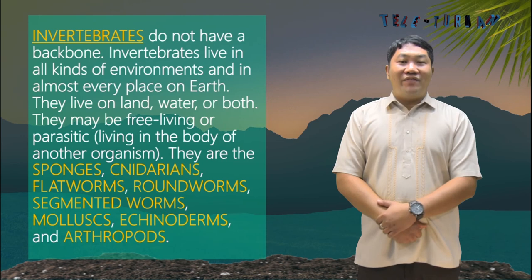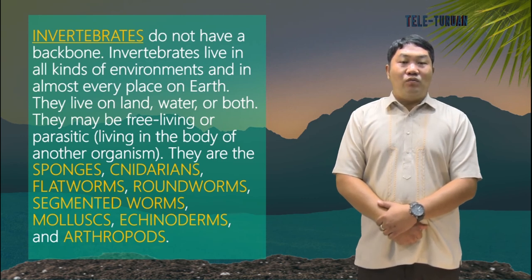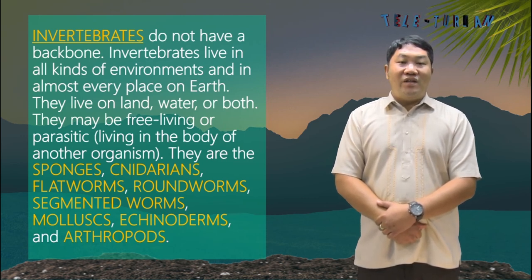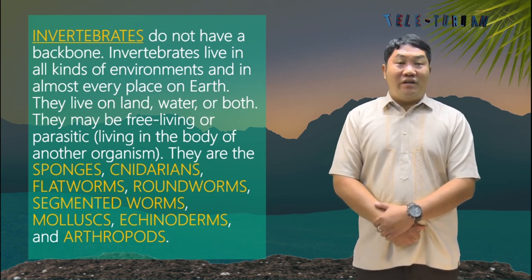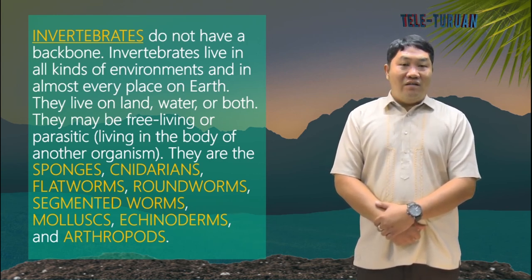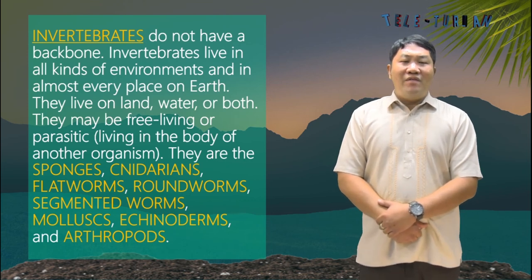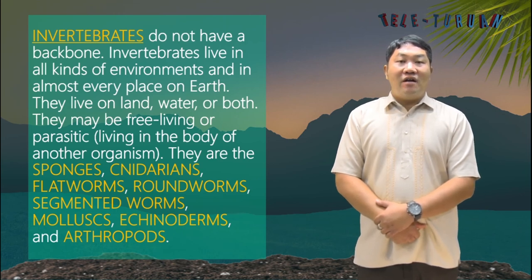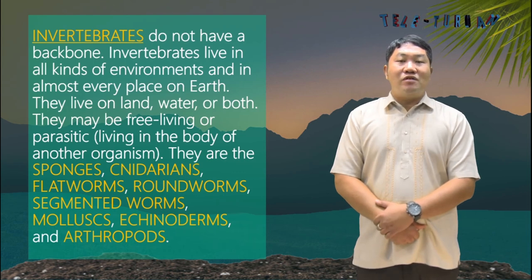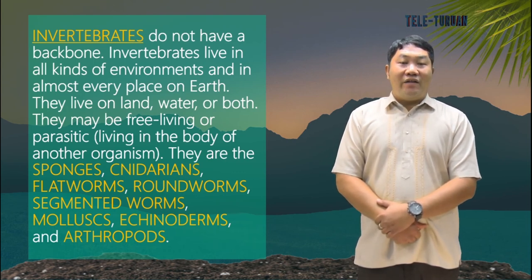Remember that invertebrates do not have a backbone. They live in all kinds of environments and in almost every place on Earth — on land, water, or both — and may be free-living or parasitic. The eight classifications of invertebrates are: sponges, cnidarians, flatworms, roundworms, segmented worms, mollusks, echinoderms, and arthropods.